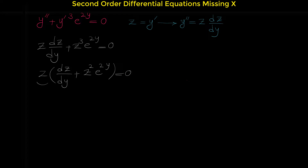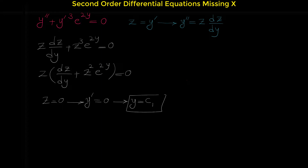Because z times this bracket equals 0, we have to set them equal to 0 separately. If z equals 0, note that z is y prime, it means that y prime is 0. And if y prime is 0, then y equals a constant — let's name it c₁. So this constant function is one solution for this differential equation.